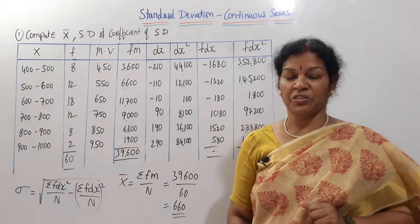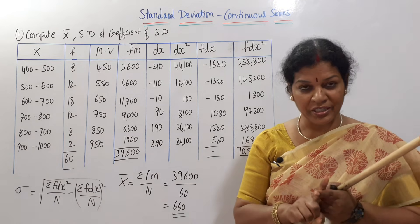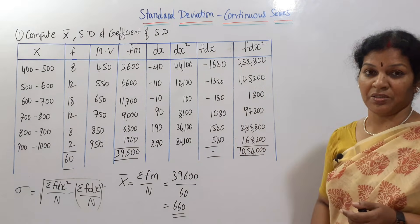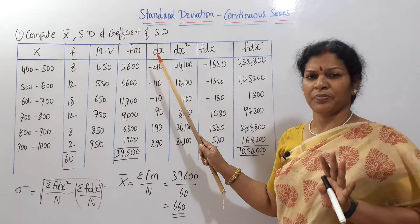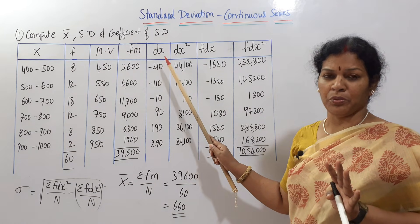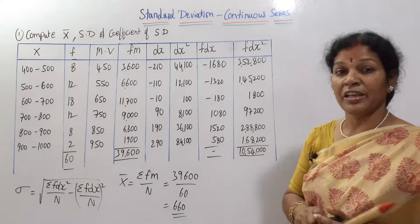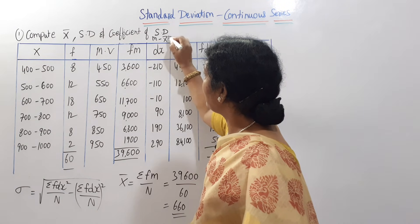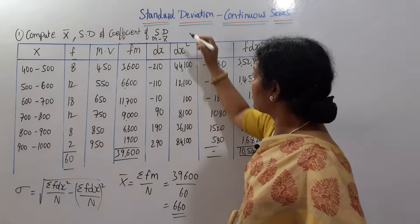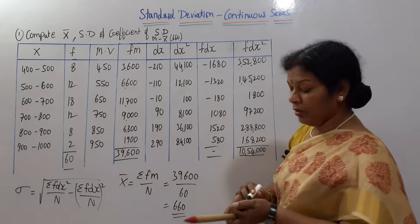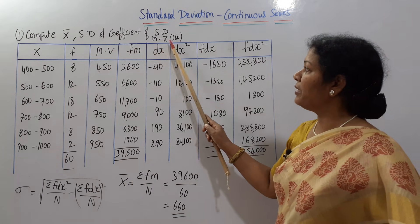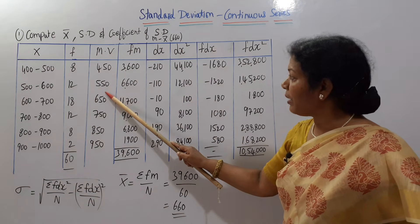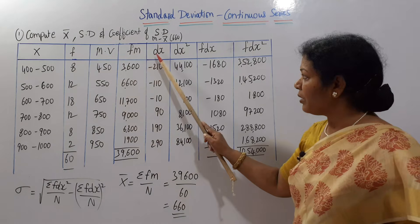Next we need standard deviation. For that, first we need dx. dx means we have to take deviations from the mid value. dx equals m minus a, and here we have taken x̄, so dx equals m minus x̄. x̄ is 660. So 450 minus 660 gives minus 210; 550 minus 660 gives minus 110. Like this, dx is obtained. We don't total dx directly since the formula never uses dx directly.